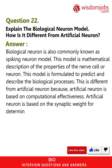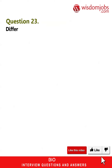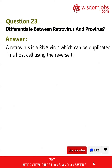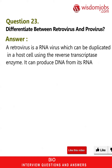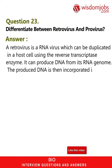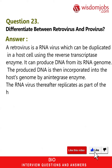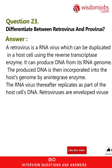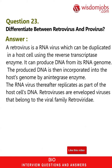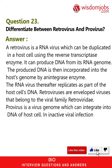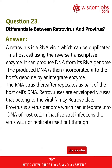Question 23: Differentiate between retrovirus and provirus. A retrovirus is an RNA virus that can be duplicated in a host cell using the reverse transcriptase enzyme, producing DNA from its RNA genome. The produced DNA is incorporated into the host genome by an integrase enzyme, after which the RNA virus replicates as part of the host cell's DNA. Retroviruses belong to the viral family Retroviridae. A provirus is a virus genome that integrates into the DNA of a host cell; in inactive viral infections it replicates through the host cell rather than independently.